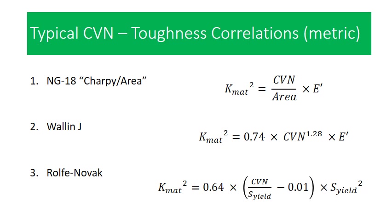The second correlation is the Wallin-J correlation. You'll find that one in API 579 — it's a very common place to find it. In that case, K-squared equals a coefficient of 0.74 times the Charpy value to an exponent of 1.28, multiplied by the material modulus. The third correlation is the Rolf-Novak correlation, also found in API 579, where we have 0.64 times Charpy divided by the yield strength of the material, minus a small offset, and all of that is multiplied by the yield strength squared.